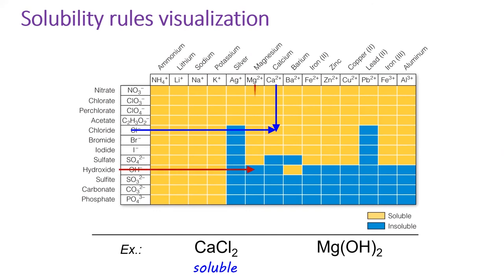On the other hand, for magnesium hydroxide, we'd find the intersection of magnesium and hydroxide, which is colored blue, indicating insoluble.